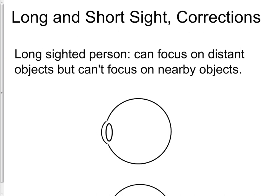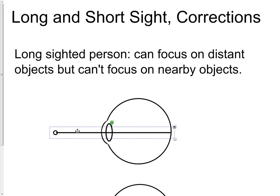Let's start with a long-sighted person. People who are long-sighted can focus on objects that are far away but they can't focus on nearby objects. If I have a nearby object and draw some rays of light — by this stage you've already drawn diagrams for a normal healthy eye — now we're looking at long-sighted and short-sighted eyes. Rays of light coming from a nearby object are diverging when they reach the eye.